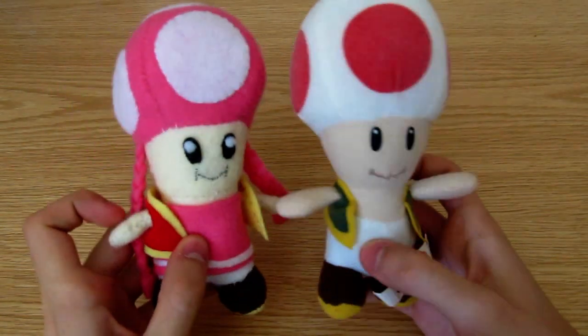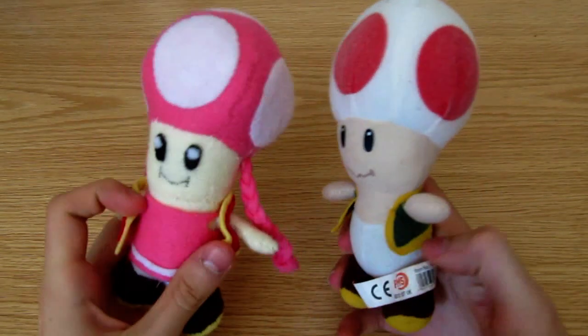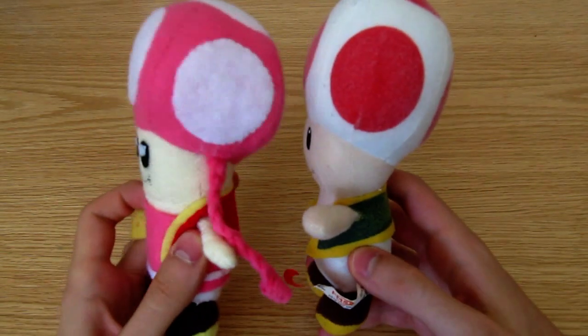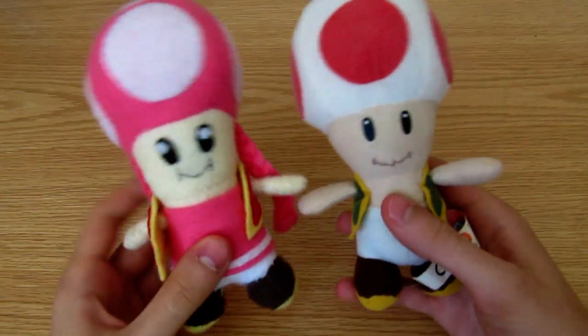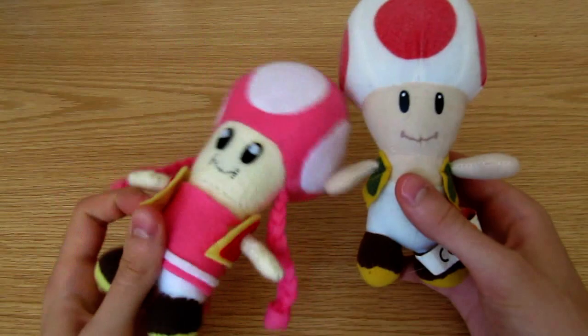But I'll still go over the extra pieces needed for Toadette, that is, the braids for her hair and the dress. This tutorial is probably slightly easier than my Yoshi tutorial, but still much harder than the Mushroom and Goomba ones.